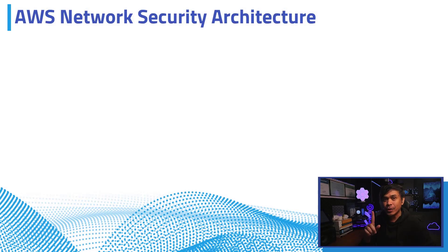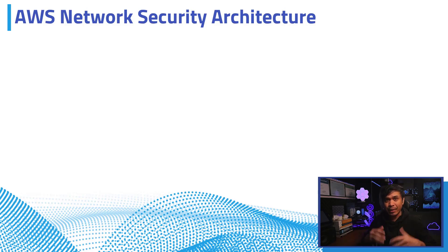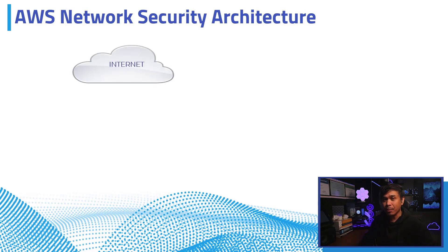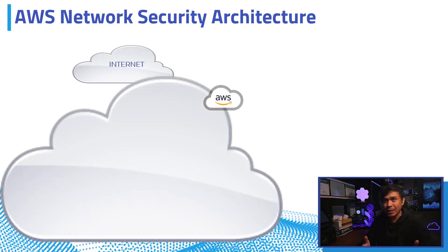Let's talk about the components, the network architecture of our network security lab. First, we have the internet, which is the public network. Then we have our AWS, Amazon Web Services, which is our cloud service provider. And here are the components.